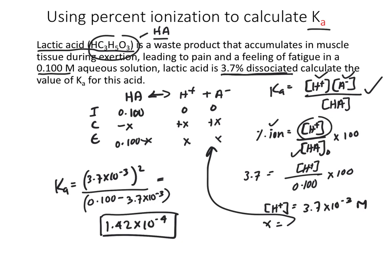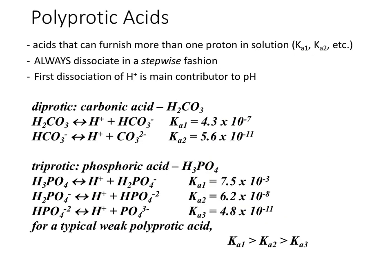Pay attention to the details of what's provided and make sure you're familiar with the equations so you can derive things not explicitly stated in the problem. Polyprotic acids are acids capable of providing more than one proton in solution, and they have multiple Ka values for each proton that can be produced. Each dissociation — K₁, K₂, etc. — occurs in a stepwise fashion, with each successive proton given away only after the previous one. The first dissociation is usually the main contributor to pH, since it puts the most H⁺ into solution.